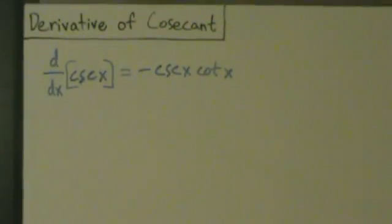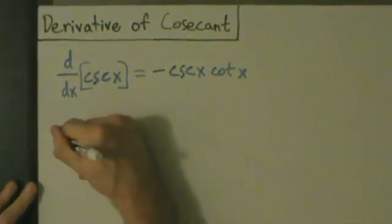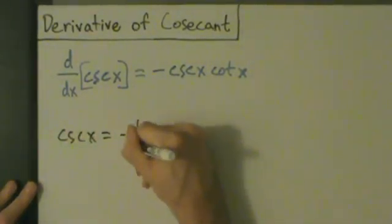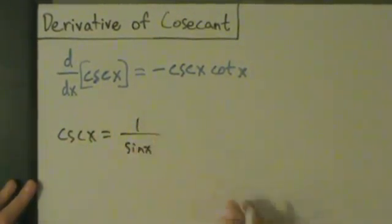So let's go ahead and prove this. And again, we're going to use the quotient rule, so we're going to say cosecant of x equals 1 over sine of x. We have to remember that first.